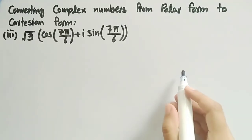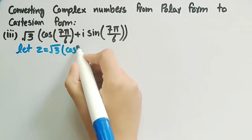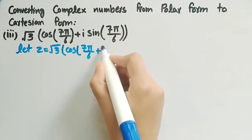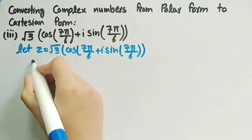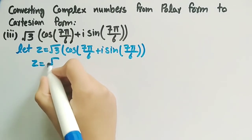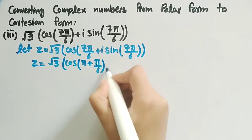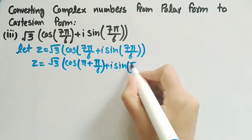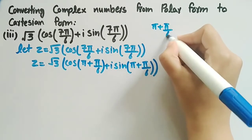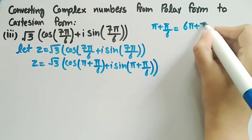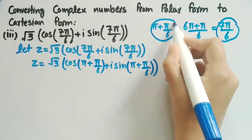Now we will discuss the third example. Let z = √3(cos(7π/6) + i sin(7π/6)). It can be rewritten as z = √3(cos(π + π/6) + i sin(π + π/6)), since 7π/6 = π + π/6.